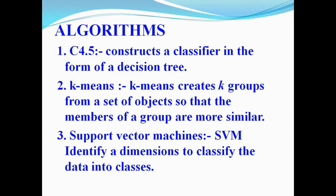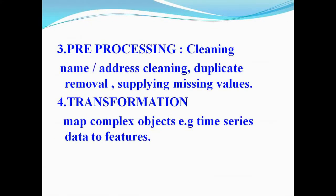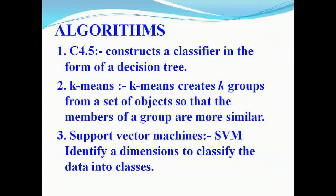C4.5 classifies and divides things based on the user's query, making related things into a decision tree. Next is K-Means — creating K groups from a set of objects. Related to the transformation step's mapping of complex objects, K-Means creates groups from a set of transferred objects.